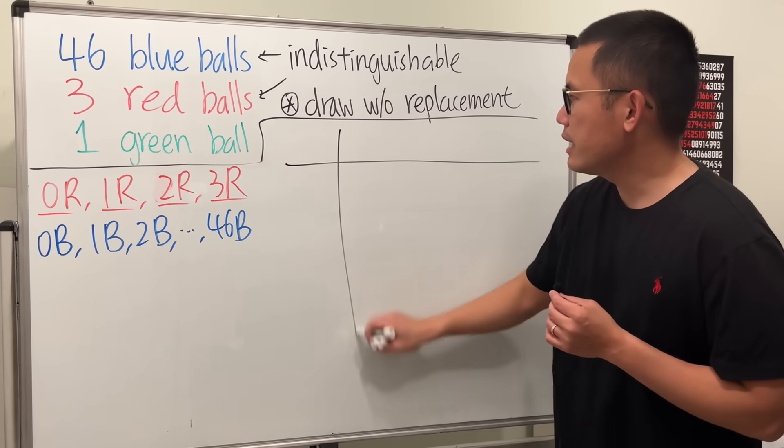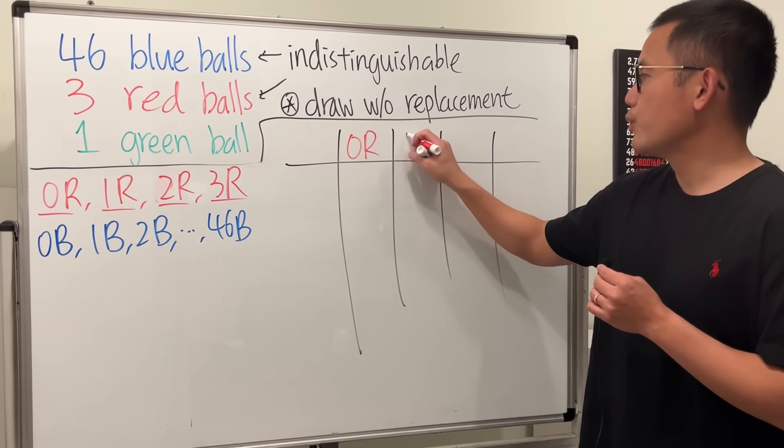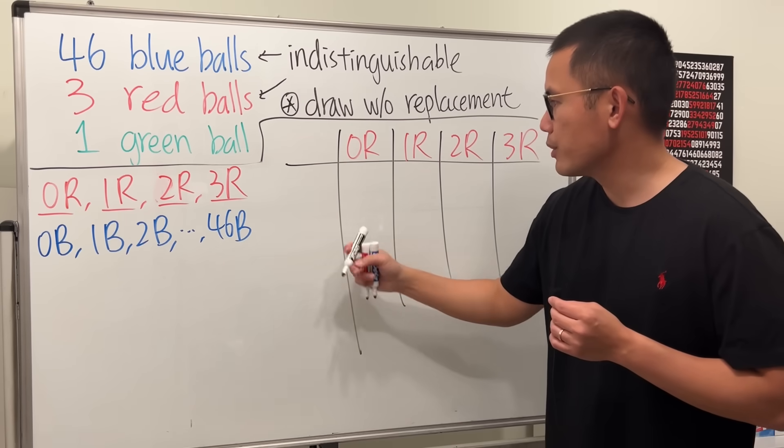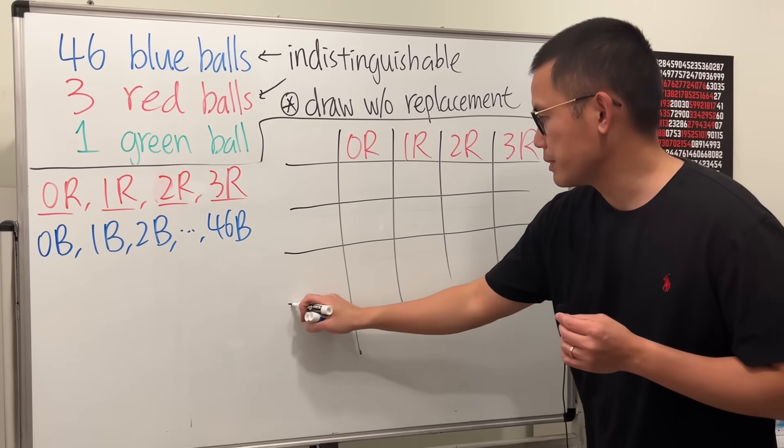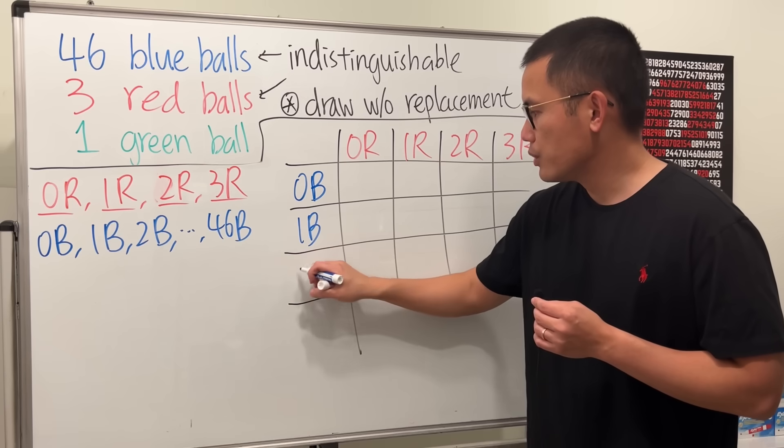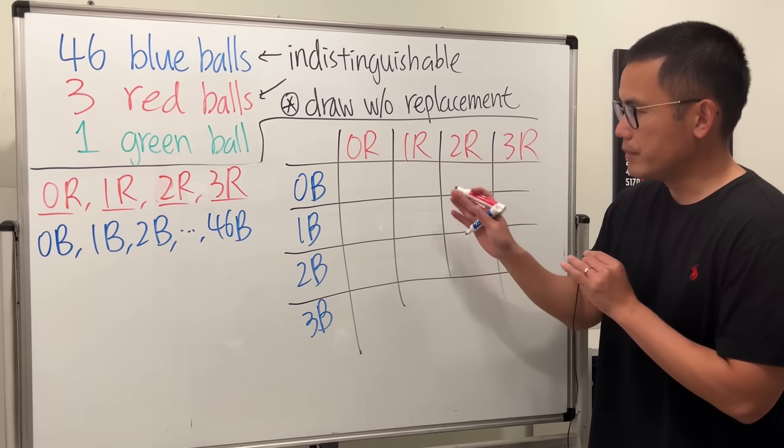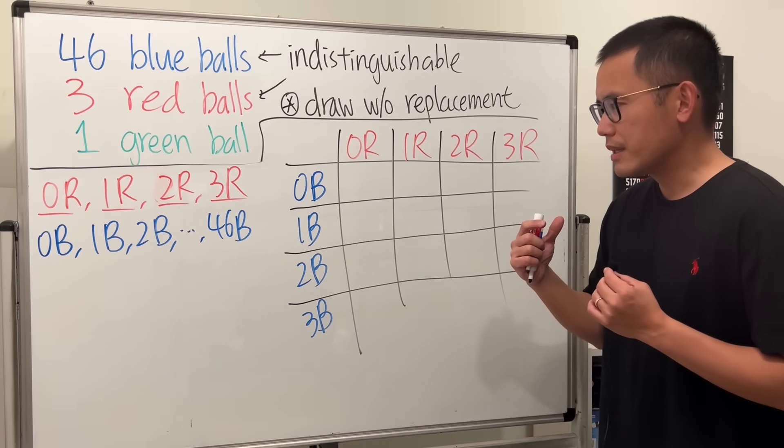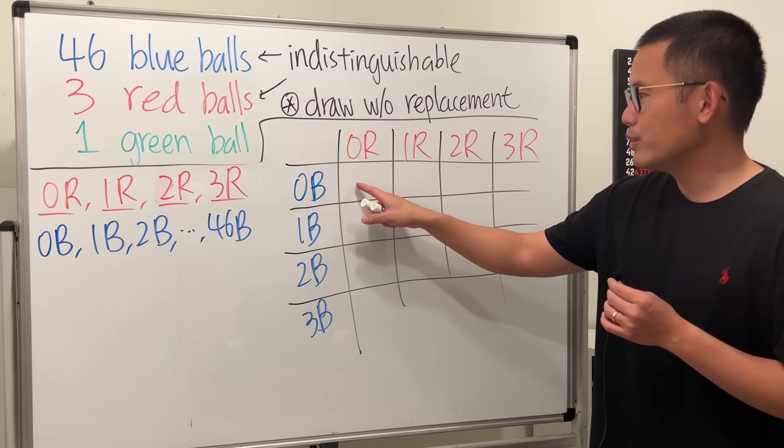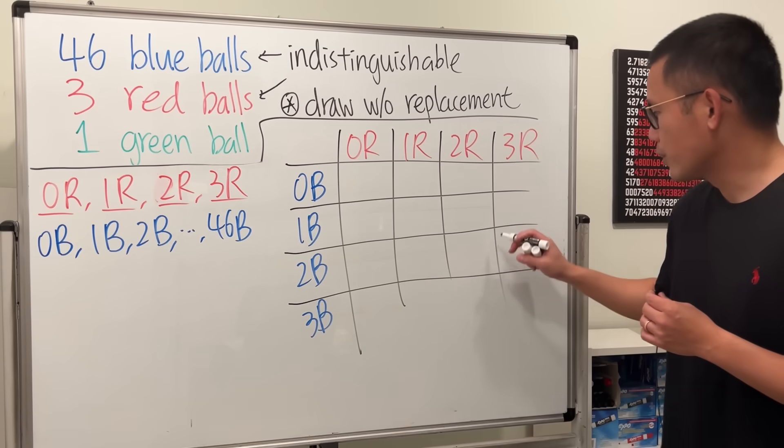Right here. Let's say we have this, right? We have 0 red, 1 red, 2 red, and then 3 red. And then on the side here, I'm going to put down the number of blues that we can possibly have. So let's say we have 0 B, 1 B, 2 B, 3 B, and so on. And of course, I don't need to fill in all the grids. We just have to figure out patterns and then just write it out.